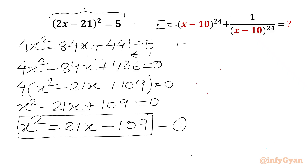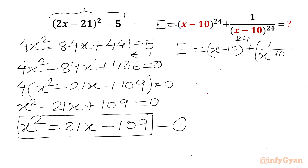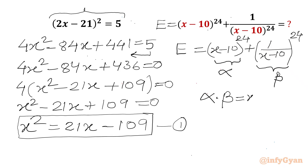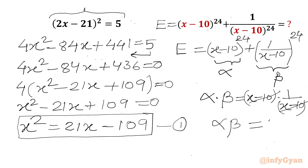Now we can write expression E = (x - 10)^24 + 1/(x - 10)^24. I will let α = x - 10 and β = 1/(x - 10). Then α × β = (x - 10) × 1/(x - 10). We can cancel these two brackets, giving us α × β = 1. Let's call this equation number 2.